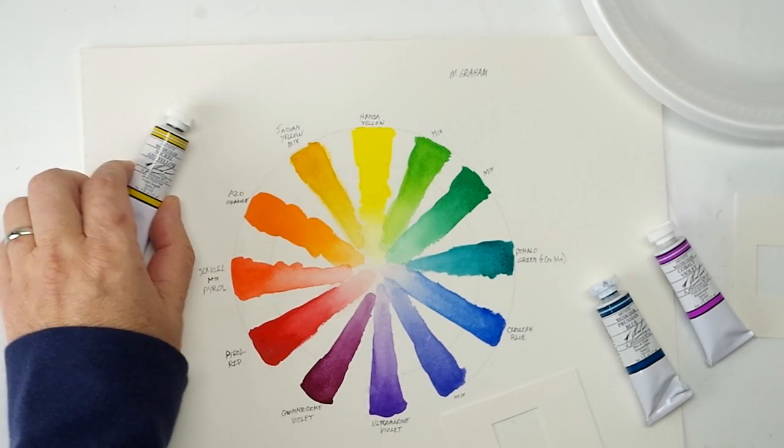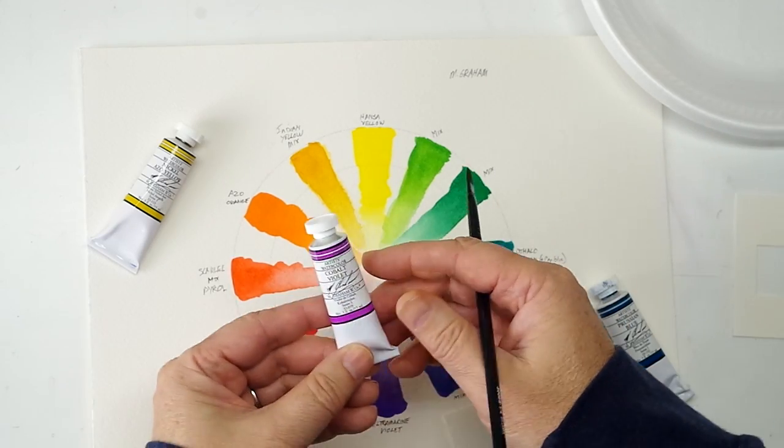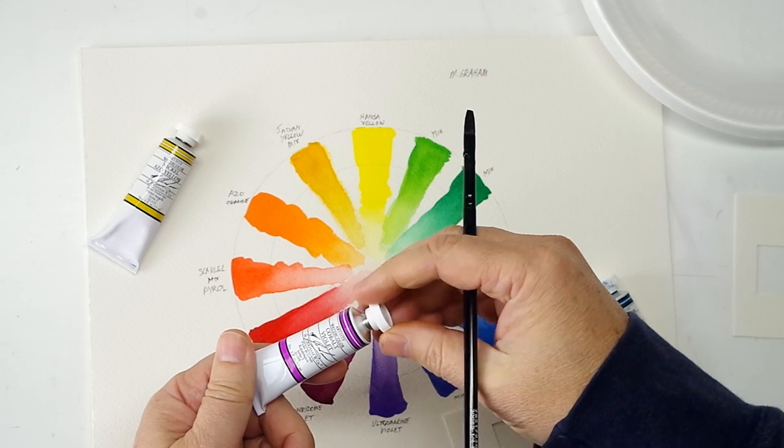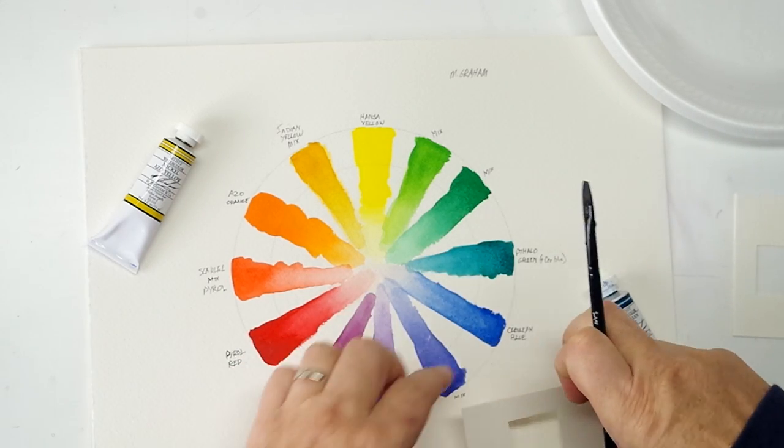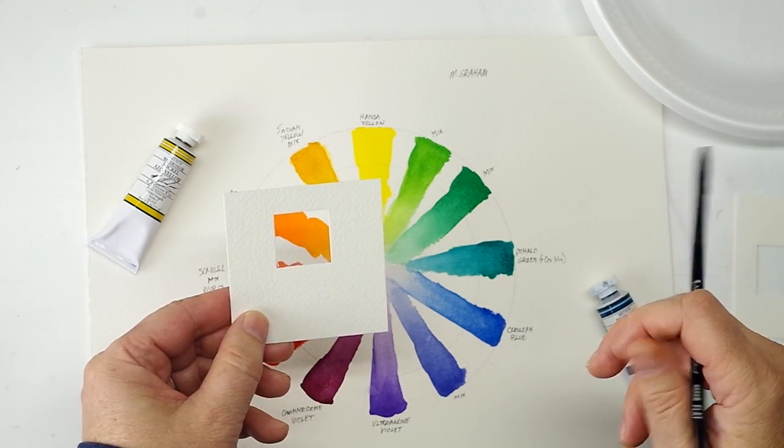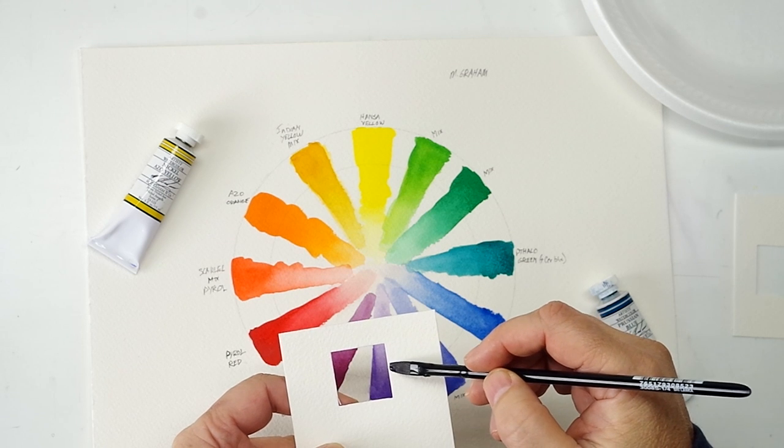So one of the things you can do is say, okay, well I've got this cobalt violet here and I want to know what's a good complement for that and where does that fit in on the color wheel. Now remember these little color viewers. I'll link to that episode also where I showed you how to make these. This is a great use for that.